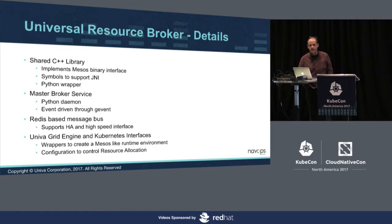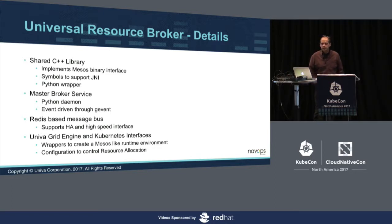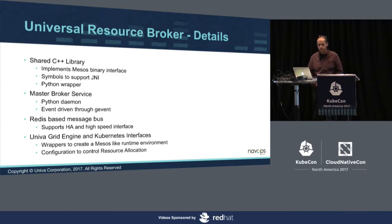We have also provided a JNI wrapper so that Java-based frameworks can talk to this, and a Python wrapper for Python-based frameworks. We're currently working on HTTP frameworks. The system itself is a master broker service, which is a Python daemon driven by gevent. On the back end, there is a Redis-based message bus. There are actually multiple backend implementations for URB — one for Kubernetes and another for our other product, Univa Grid Engine. You could add further implementations for yet another orchestration system if needed.